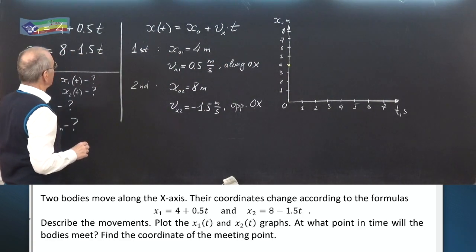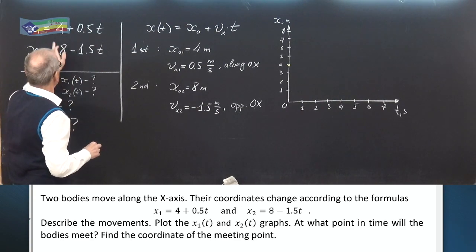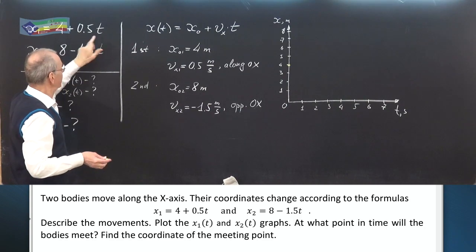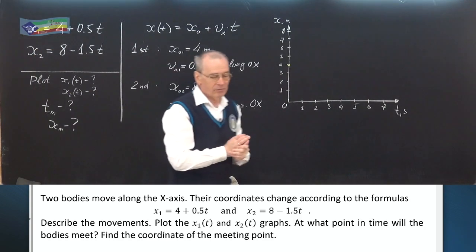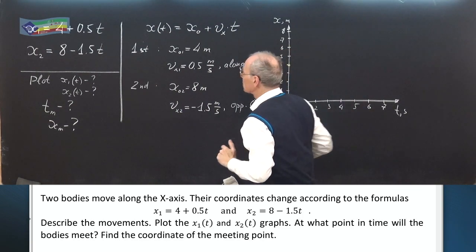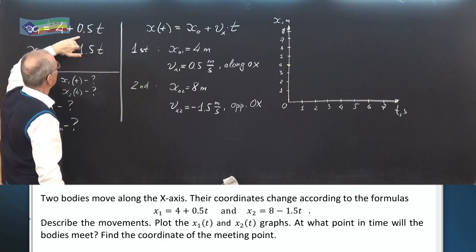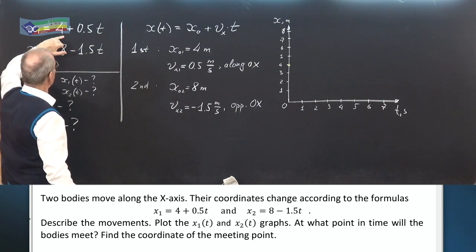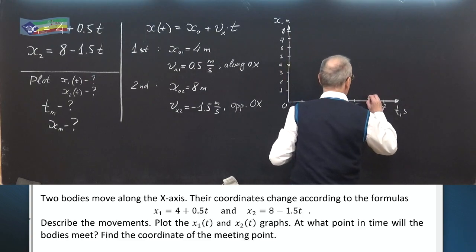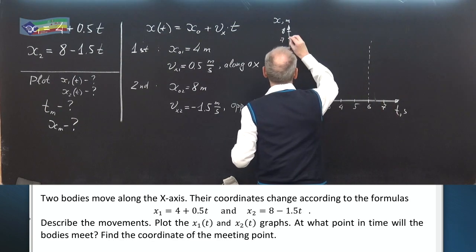Then, the second point of the straight line can be calculated if we substitute any time in this formula. For example, 6 seconds. When time equals 6 seconds, here we have 3 meters plus 4, 7 meters. 6 seconds, 7 meters.